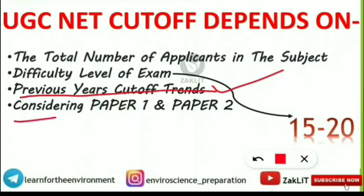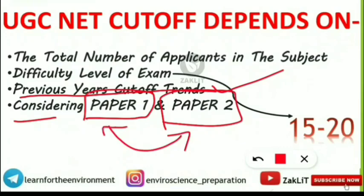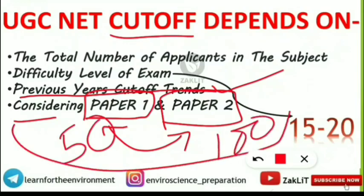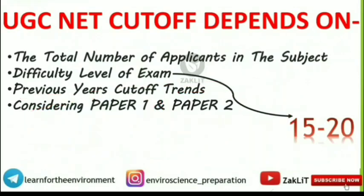Next is considering both Paper 1 and Paper 2, because the combined mark — the combined percentage — will be called the cut-off percentage. So 50 questions from Paper 1 and 100 questions from Paper 2, all 150 questions will be considered for calculating the cut-off. All these things you have to keep in mind while considering the cut-off.